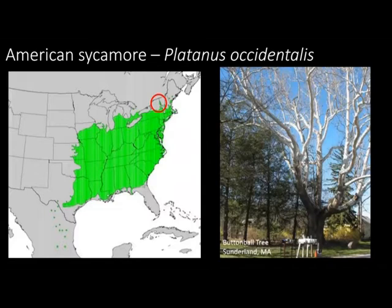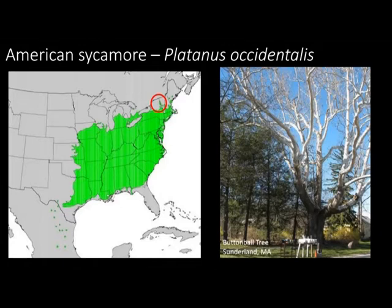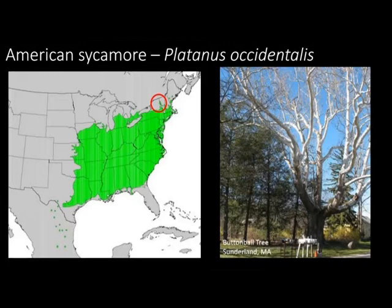A question came in about American sycamore, Platanus occidentalis, found in the Champlain Valley — we're sort of at the northern end of its natural range. It's common on wet soils such as stream banks or in floodplains. If you want to see a stand of it, come to Sycamore Park in Bristol. It's a big tree — the button ball tree in Sunderland, Massachusetts is over 113 feet tall with a crown width of 140 feet and over eight feet in diameter, possibly as much as 400 years old.